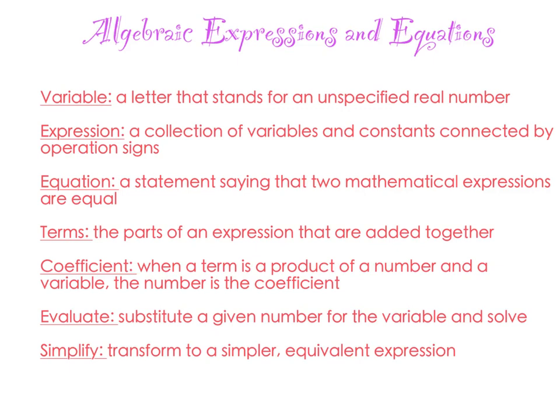The terms are the parts of the expression that are added together, and the coefficient is the number that goes with the letter. So if I had 2X, the coefficient would be 2. To evaluate means to substitute a given number for the variable - if I said evaluate 2X when X is 5, you would plug a 5 in for X. And simplify means to take an expression and make it a simpler but still equivalent expression.